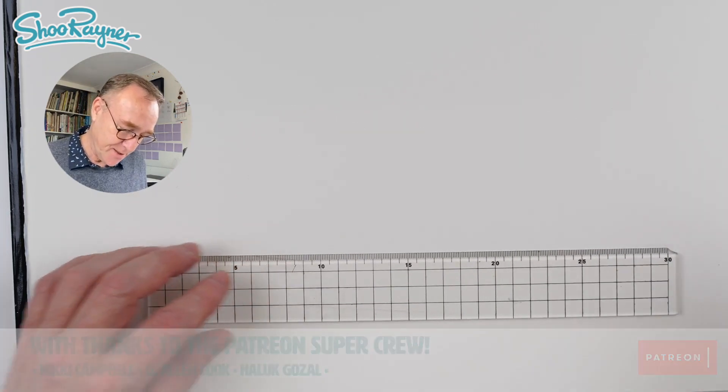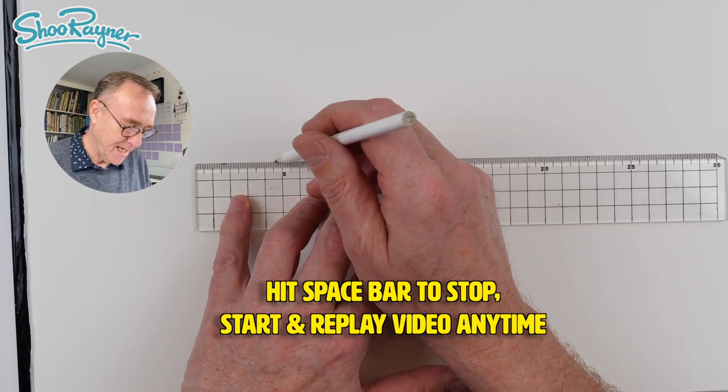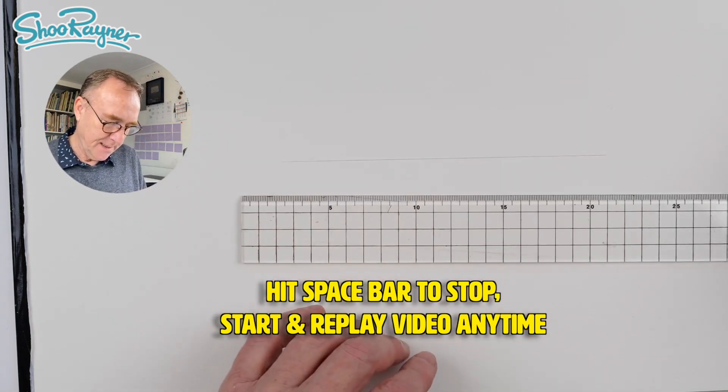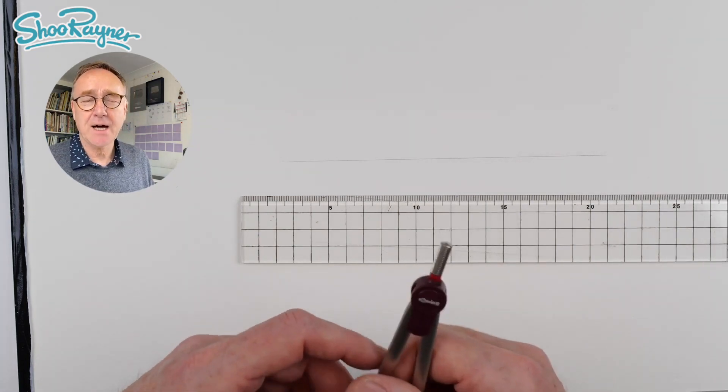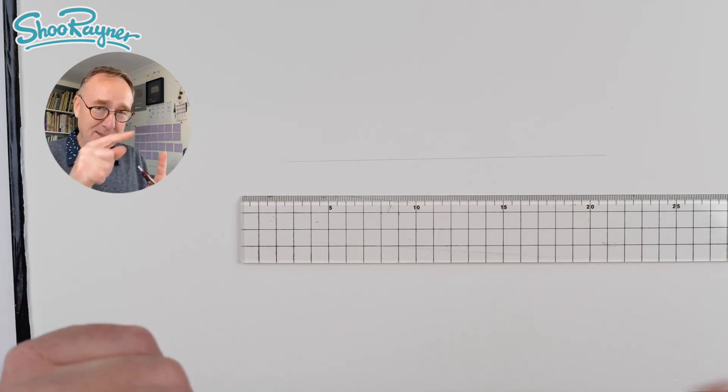Today we're going to construct a couple of triangles. Let's do one at the top here first and I'm just going to draw a line across there. Let's say we want to draw an equilateral triangle which means it's exactly the same length on each side.